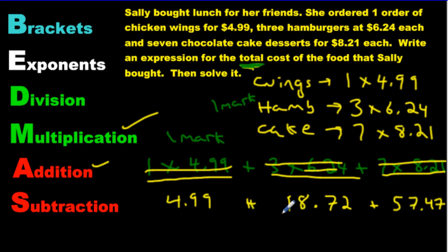Now we just have addition left. And all we have to do is just stack these numbers, line up your decimals when you stack them. And if you stack them all and solve it, you're going to get $81.18.